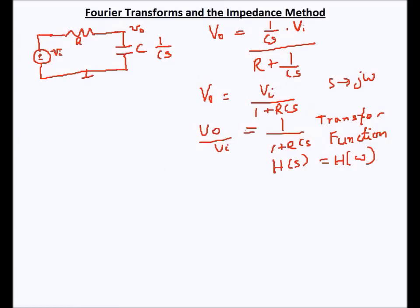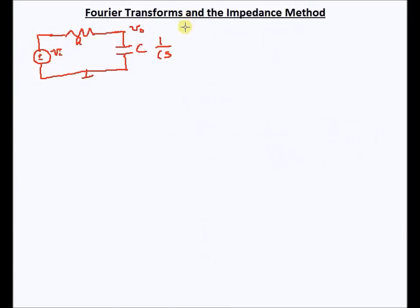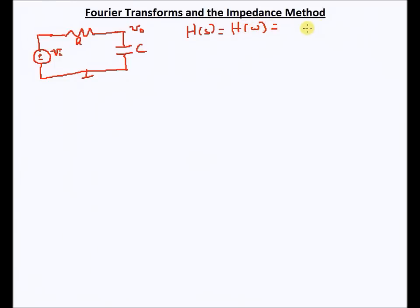Now I'm going to connect this with the Fourier transform. The transfer function is actually the Fourier transform — that's what we'll see by the end of this video. Let me record that result: H(s) equals H(ω), and that equals 1 over (1 + jRCω).